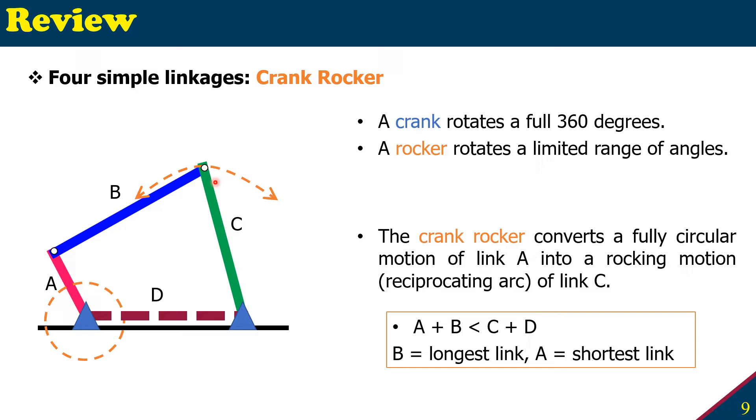And if we apply, remember the Grashof's law, the sum of the longest and shortest length, which here A is the shortest and B is the longest, the sum of them has to be less than or equal to, in this case, less than the other length. So this is the law for this crank rocker to have continuous motion.